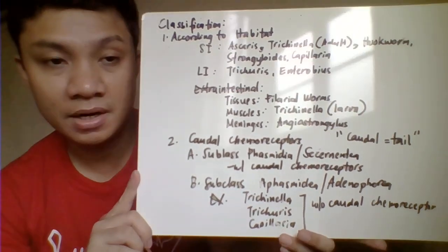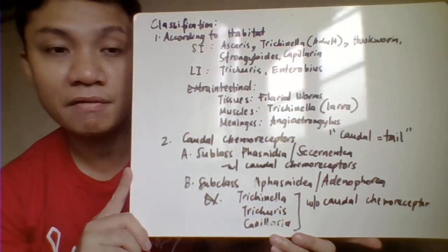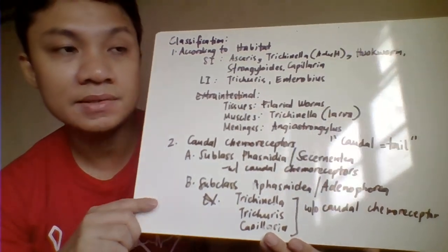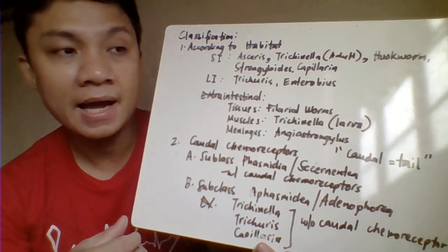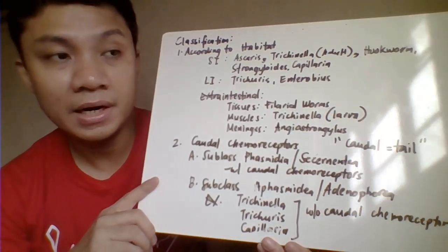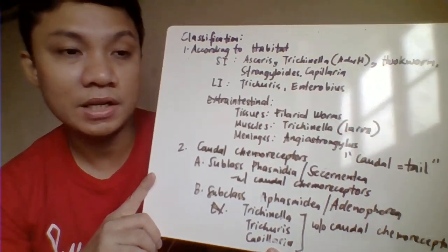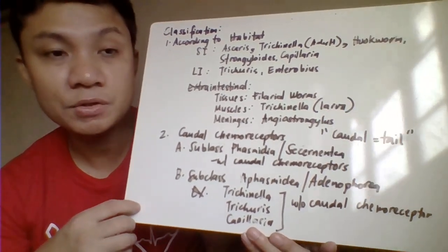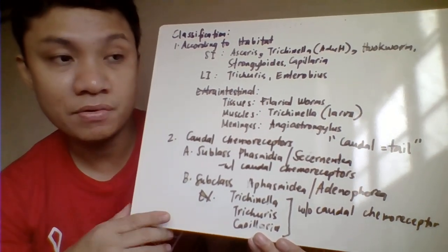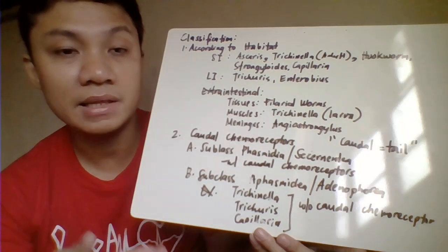We have the classification of nematodes according to their habitat. We're talking about the habitat of adult worms. Adult worms of Ascaris, Trichinella, hookworms, Strongyloides, and Capillaria inhabit the small intestine. Trichuris and Enterobius inhabit the large intestine. Other nematodes can inhabit extra-intestinal areas like tissue nematodes - the filarial worms. They can also inhabit muscles in the case of Trichinella spiralis larvae, and the meninges in the case of Angiostrongylus cantonensis, the rat lungworm.